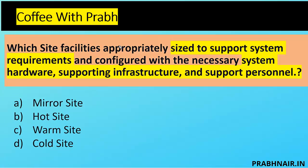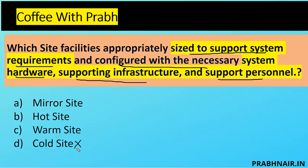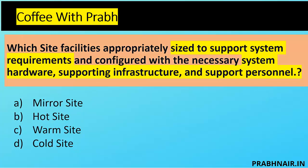Question 2: Which site facility is appropriately sized to support system requirements and configured with the necessary system hardware, supporting infrastructure, and support people? Cold site is removed because we only have water and power. Warm site is removed because it has servers but doesn't fully support system requirements. Mirror site is gone because it doesn't have data. The only close option left is hot site — on a hot site we have everything except data. We need to move data and make it operational. Answer is B — hot site.